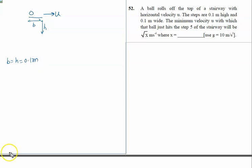What is the minimum velocity u with which the ball will just hit the fifth step of the stairway? This is the zeroth, this is one, this is two, this is three, this is fourth. Of course, if it crosses the fourth, it will definitely hit the fifth.